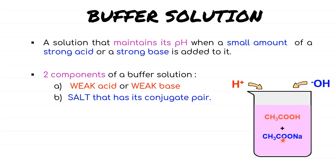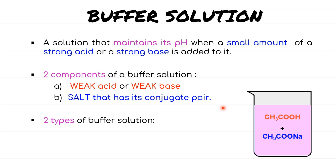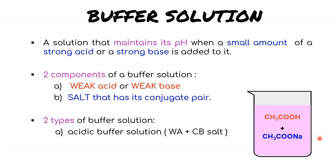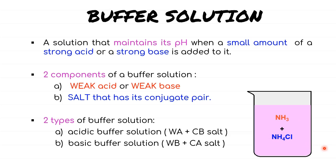Apart from knowing the components, you must also know the types of buffer solutions. The example we have here is called an acidic buffer because its components comprise a weak acid from CH₃COOH, and then the conjugate base salt from CH₃COO⁻Na. Another type would be a basic buffer solution, where the solution contains a weak base. In our case, the weak base is NH₃, and then the conjugate acid salt would be NH₄Cl. The same concept discussed earlier applies to this basic buffer as well.